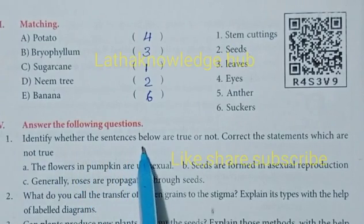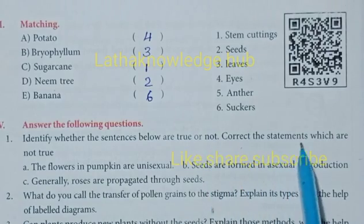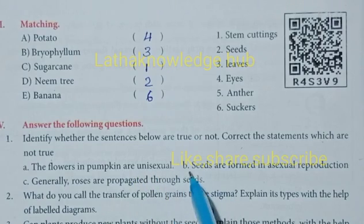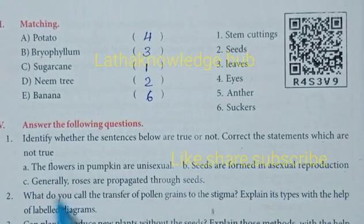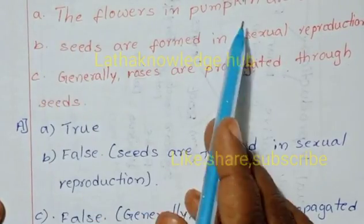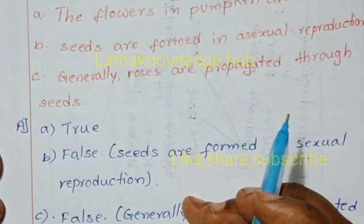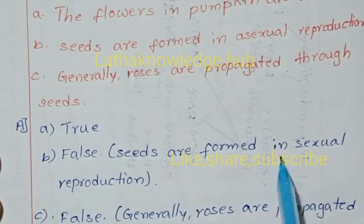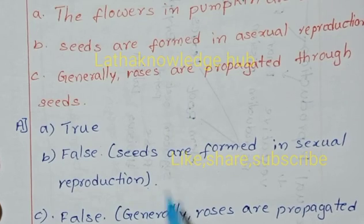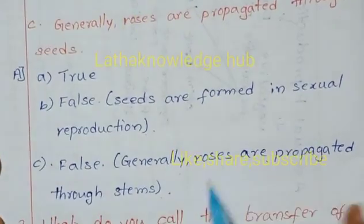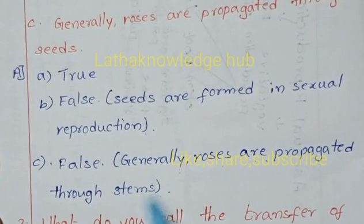Identify whether the sentences are true or not and correct the false ones. a. The flowers in pumpkin are unisexual - True, because we can see unisexual flowers in pumpkin creeper. b. Seeds are formed in asexual reproduction - False, because seeds are formed in sexual reproduction. c. Generally roses are propagated through seeds - False, generally roses are propagated through stems.